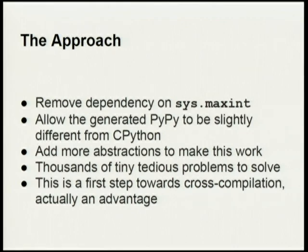The approach is getting rid of certain dependencies. PyPy depends on sys.maxint, and sys.maxint defines what is an int and what is a long in the implementation of Python/PyPy. All these things have to be generalized and removed. It's not a really hard problem and it's not very Windows-specific — it's just thousands of tiny tedious problems to solve. I've worked on that since last summer, about three times two weeks worth, and I always say I'm 90% there and the third 90% is done.